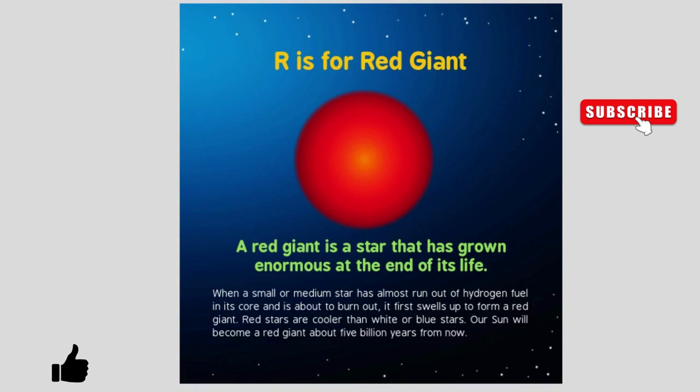R is for Red Giant. A red giant is a star that has grown enormous at the end of its life. When a small or medium star has almost run out of hydrogen fuel in its core and is about to burn out, it first swells up to form a red giant. Red stars are cooler than white or blue stars. Our Sun will become a red giant about 5 billion years from now.